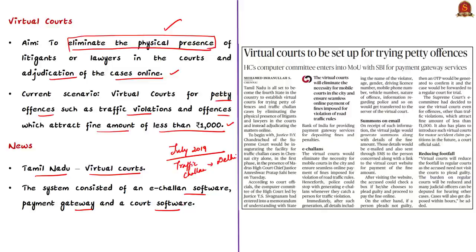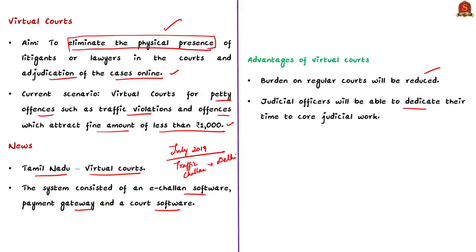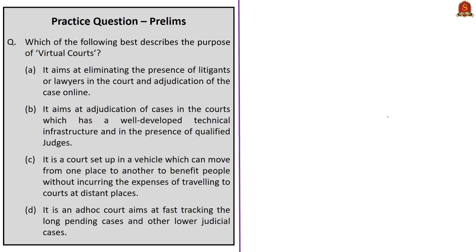These virtual courts will reduce the number of cases in regular courts as the accused need not visit the courts to plead guilty, thus reducing the burden on regular courts. Cases get disposed within hours in virtual courts. Judicial officers previously dedicating time to try petty traffic offenses will now be available for core judicial work. The question asks which best describes the purpose of virtual courts — the correct answer is option A: it aims at eliminating the presence of litigants or lawyers in the court and adjudicating the case online. Option B is about e-court and option C is about mobile court.